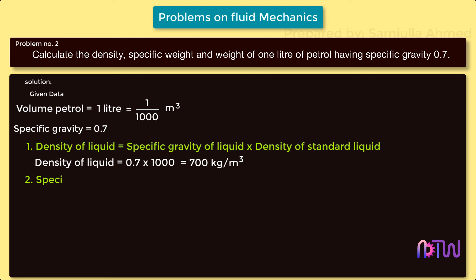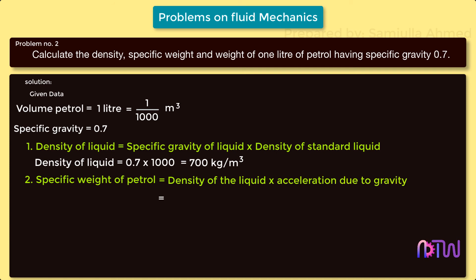Second, specific weight of petrol equals density of the liquid into acceleration due to gravity. Density is 700 kg/m³ multiplied by g = 9.81 m/s². Therefore, specific weight of the petrol is 6867 newton per meter cube.